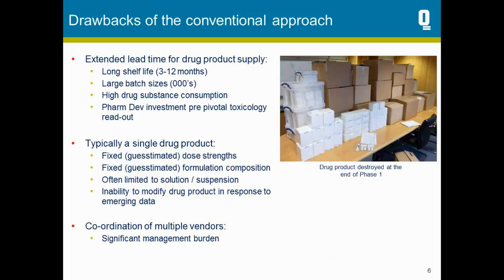Looking at the drawbacks of this conventional approach in more detail: the first is extended lead times for drug product supply. Stability data needs to be generated to support a long shelf life, purely because of the time taken for the transition from manufacturer through to packaging and labeling sites and then onto the clinical sites — this takes both time and money. Also, batch sizes are generally far larger than actually required, resulting in unnecessary use and associated cost of API. The photograph on this slide is an example of drug product we were asked to incinerate at the end of a successful phase one study — about 5,500 units of product simply in excess of what was required to complete that study.